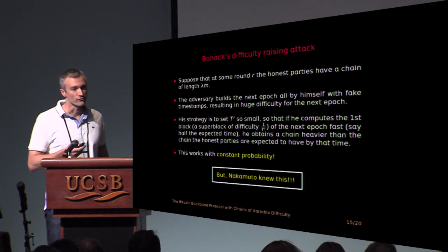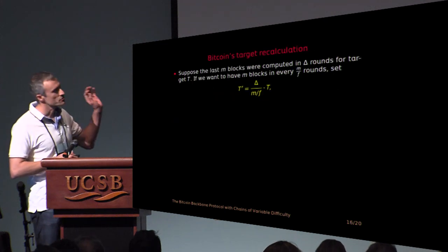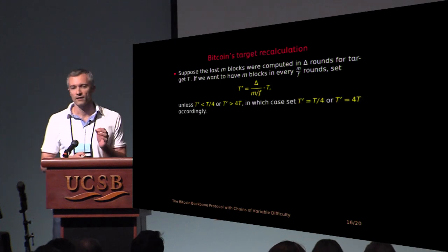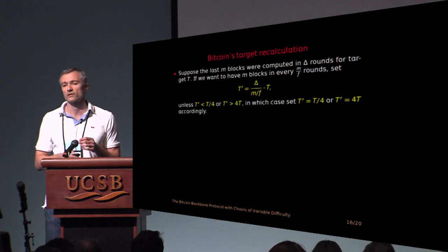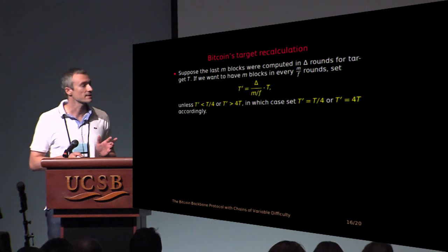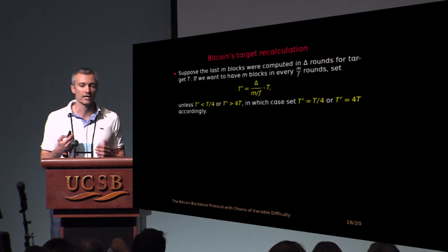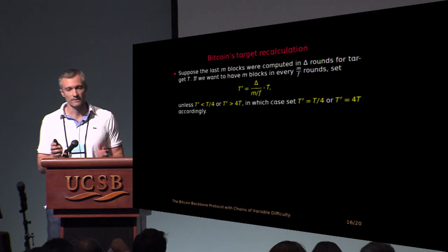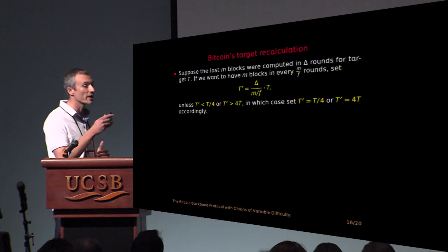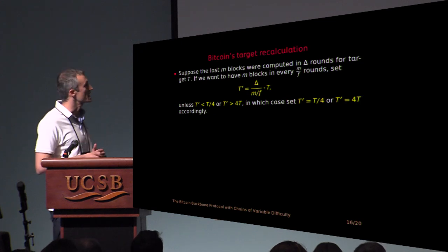But Nakamoto knew this, so this is not what Bitcoin does. Bitcoin uses the same formula exactly, with the only difference that if this formula says that you should increase your target by a value larger than four, then it says you should stop there. You shouldn't do more than four, or you shouldn't decrease your target by more than four. That's it. So this stops Bahack's attack, because you should wait longer until the hardness has increased by as much as you would like.